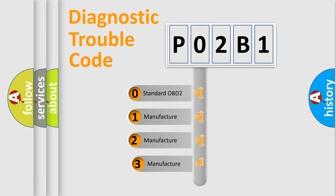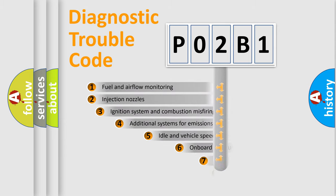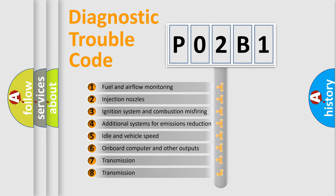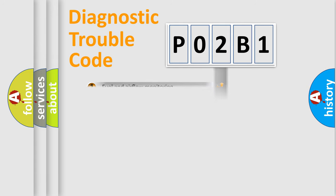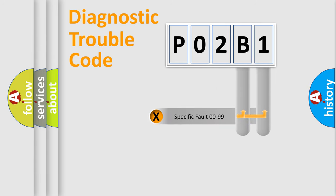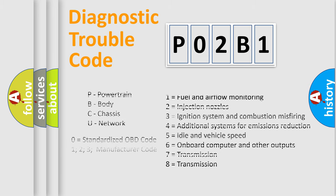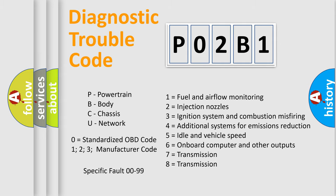If the second character is expressed as zero, it is a standardized error. In the case of numbers 1, 2, or 3, it is a more specific expression of a car-specific error. The third character specifies a subset of errors. The distribution shown is valid only for the standardized DTC code. Only the last two characters define the specific fault of the group. Such a division is valid only if the second character code is expressed by the number zero.